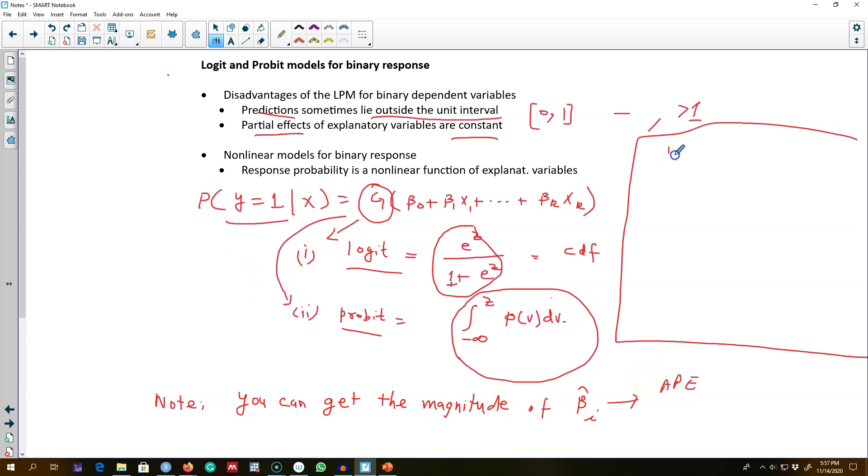Also, for the exclusion restrictions, normally in the usual case we use F-test. But in the case of a non-linear model like a logit model, you can either apply a Wald test or a likelihood ratio test.